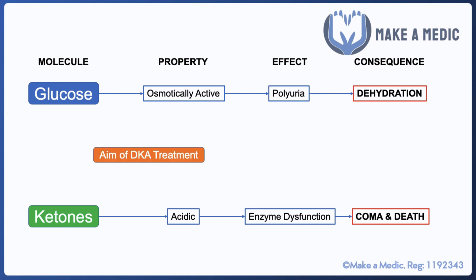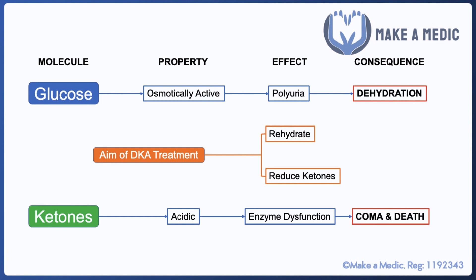Based on this, we can figure out the aims of DKA treatment. We need to address two things: rehydrate the patient using IV fluids, and switch off ketone production using insulin — because, as mentioned, insulin under normal circumstances switches off ketone production.